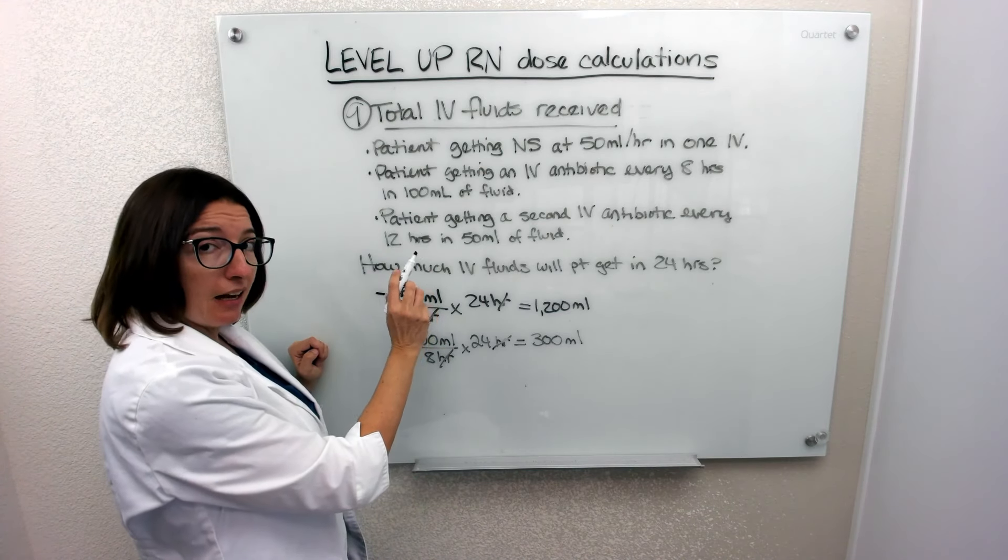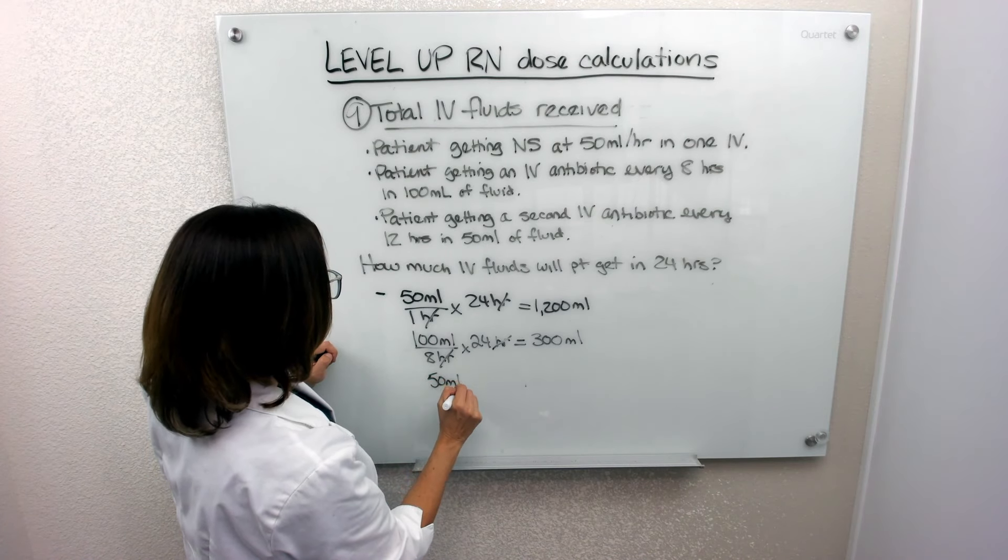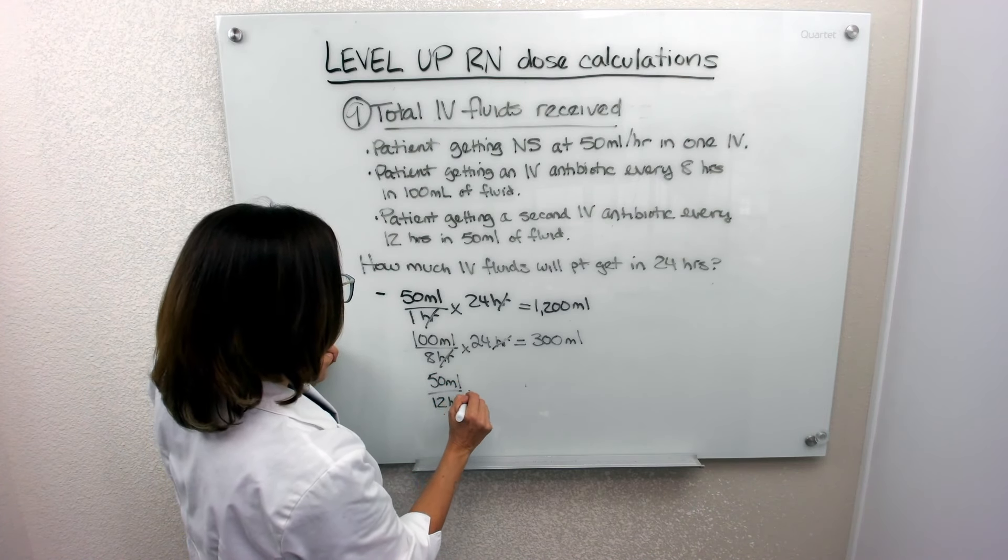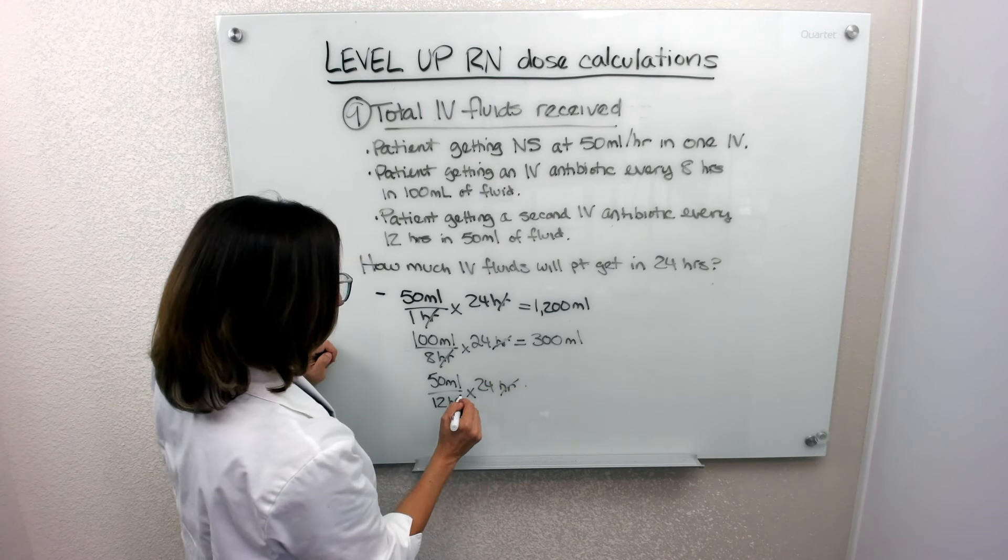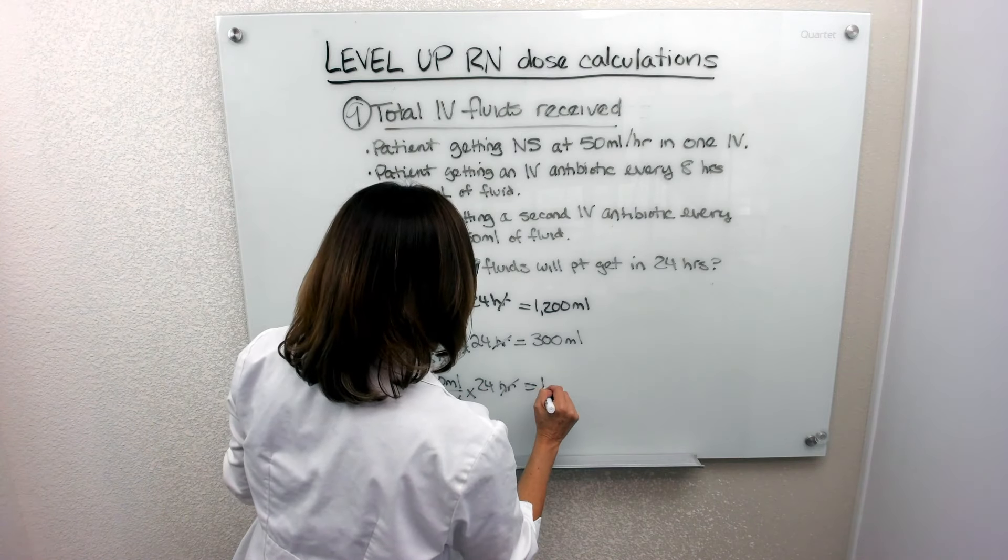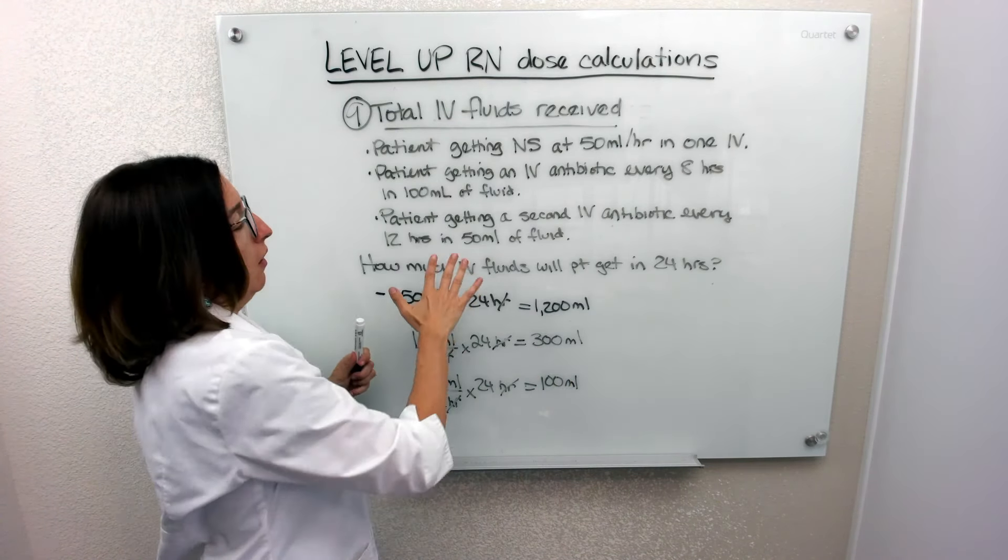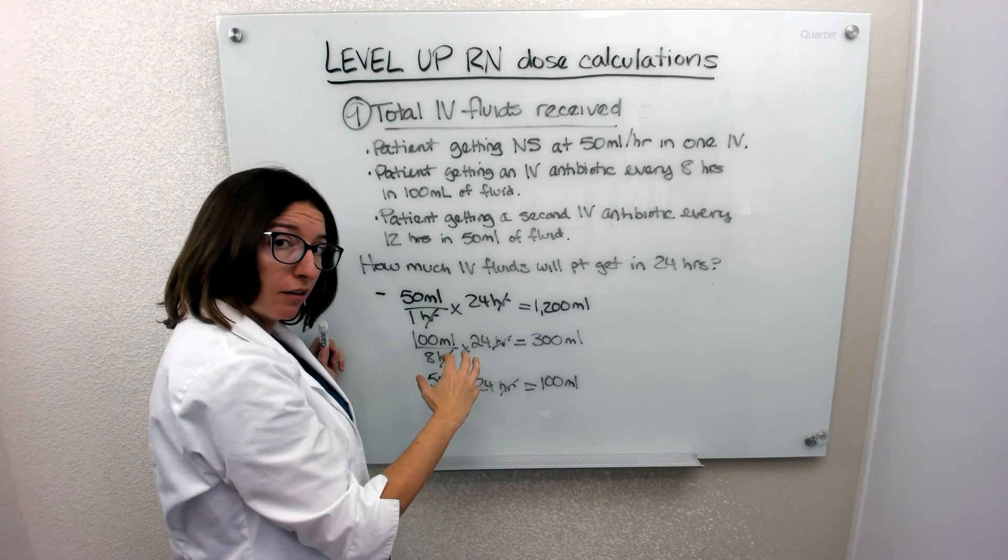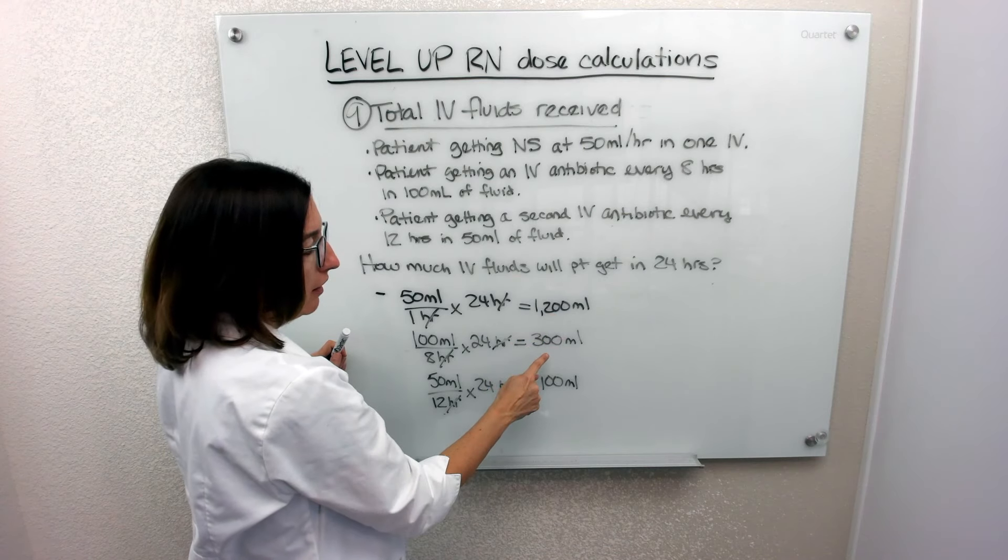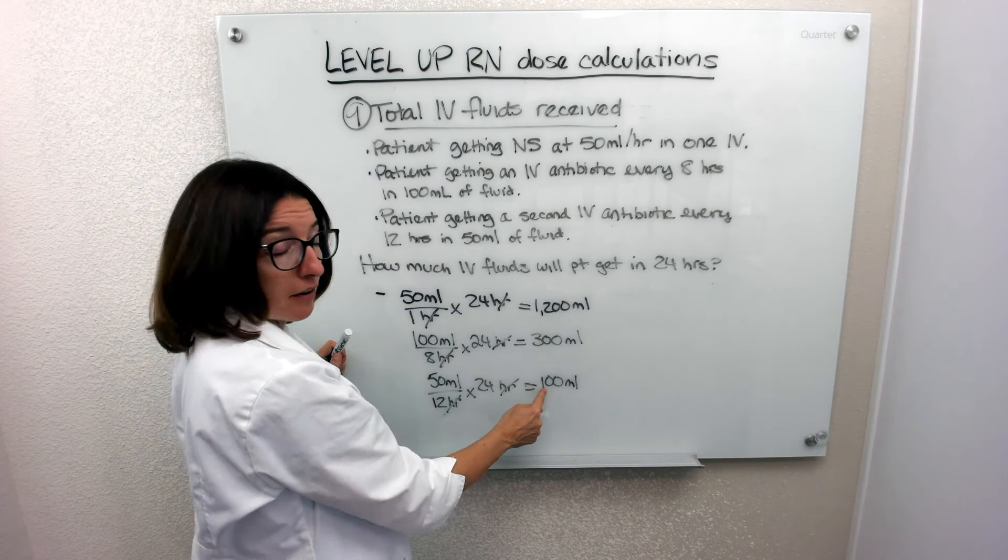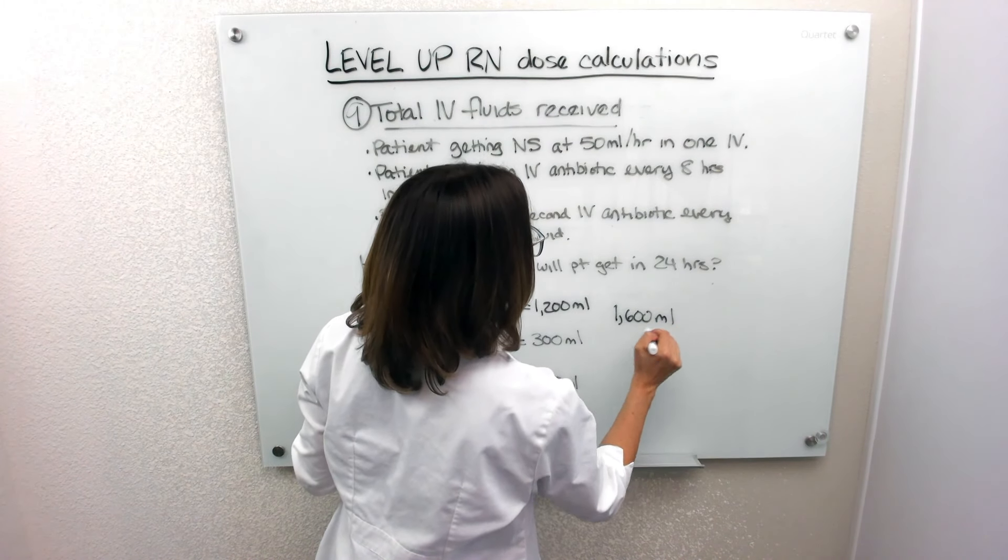And then for the second antibiotic, we're going to be getting 50 milliliters of fluid every 12 hours. And again, if we multiply that times 24 hours, we're going to end up with 100 milliliters. So when we're calculating how much they get total as far as fluids within a 24-hour period, we just add 1,200 to 300, which is 1,500 plus another 100 is 1,600 milliliters total.